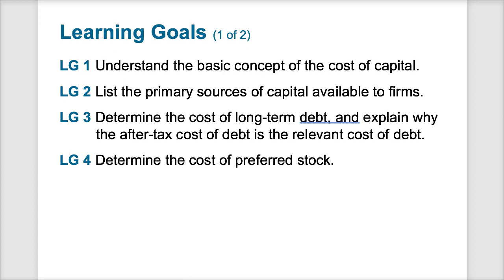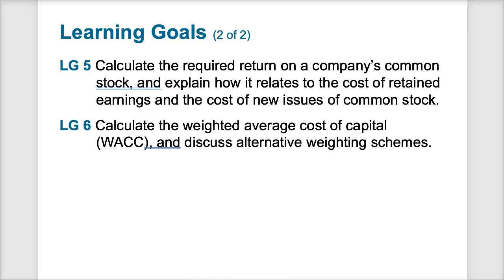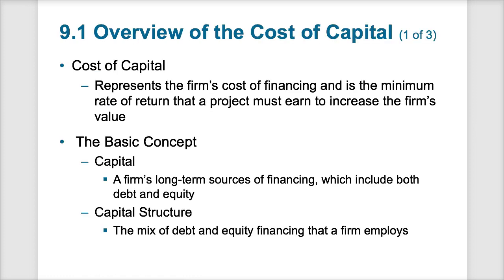Companies can set up their capital structure, and within the capital structure will be all the primary sources of capital available to a firm. I'll show you how to determine the cost of long-term debt and how the after-tax cost of this debt is relevant to the cost of capital. We're going to look at calculating the cost of preferred stock, as well as calculating the cost of common shares, retained earnings, and the issuance of new common stock. Finally, I'll walk you through the WACC, or weighted average cost of capital.